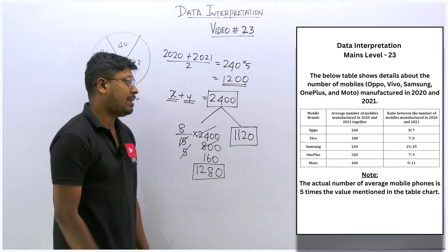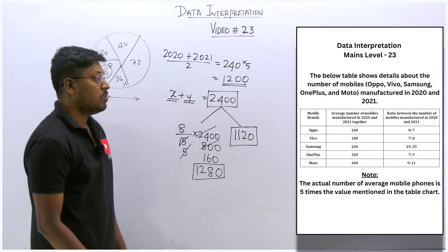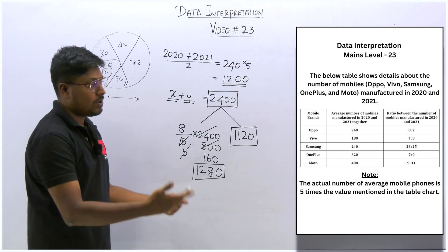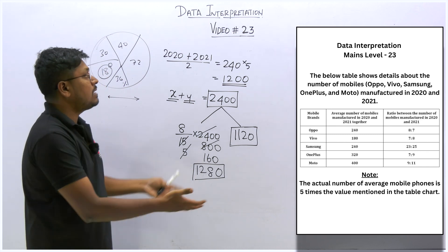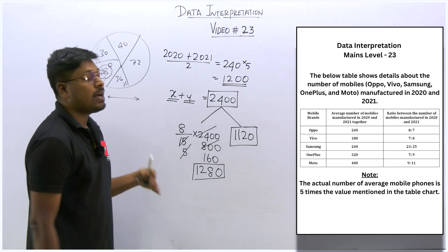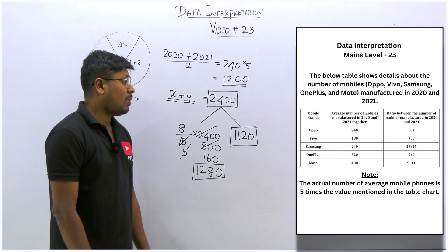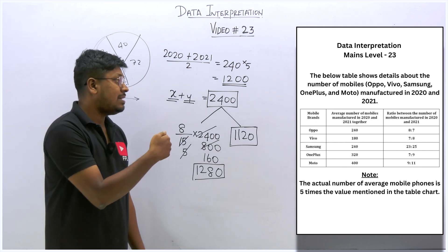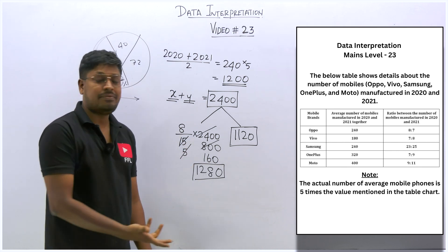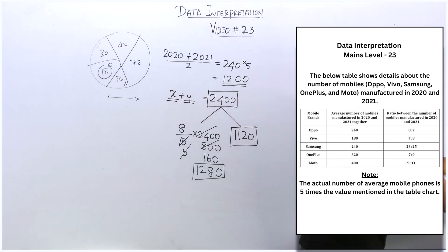Now we have to frame a table chart similarly and find values for all remaining brands: Samsung, OnePlus, Moto, and the others. After framing that table, we solve the questions. Solving all five questions based on this DA should not be that difficult.